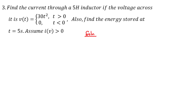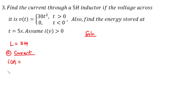The inductance of the inductor is given as 5 henrys. We want to find the current through it. The current i(t) through an inductor is given by one over L times the integral from t-naught to t of v(t) dt.